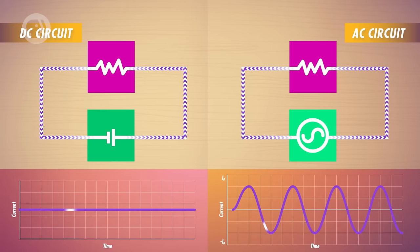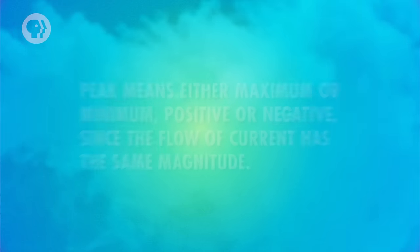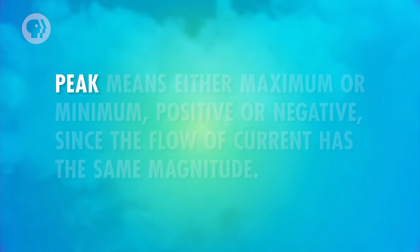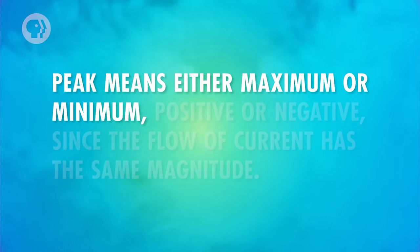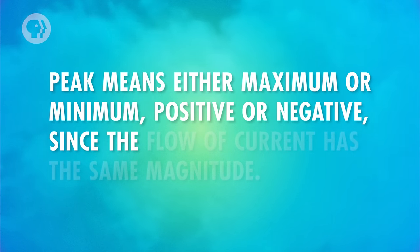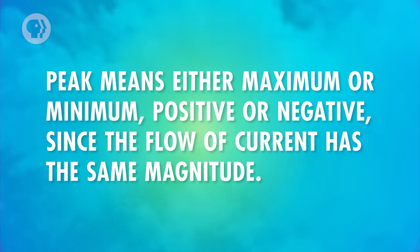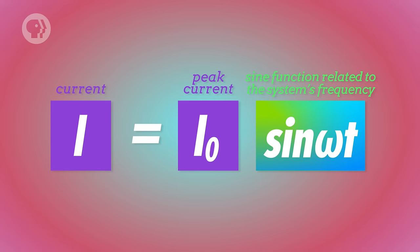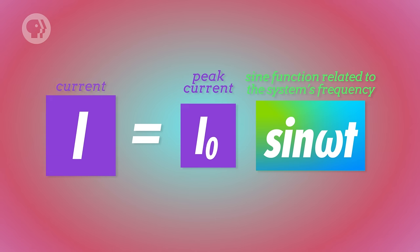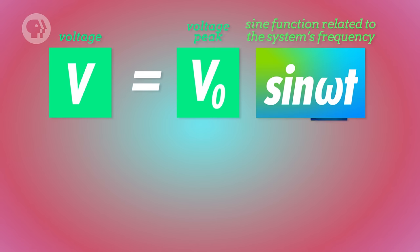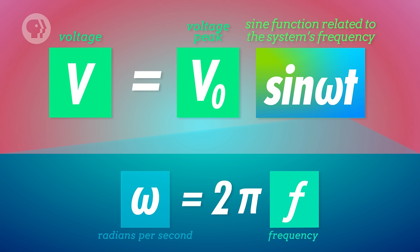When a current alternates quickly, it's changing back and forth between maximum and minimum values, known as peak current. Peak here means either maximum or minimum, positive or negative, since the flow of current has the same magnitude. Mathematically, a current is equal to the peak current times a sine function related to the system's frequency, typically 60Hz. And the same is true for the voltage in an AC circuit — it changes between a maximum and minimum peak voltage in order to generate the alternating current.